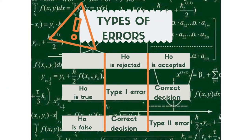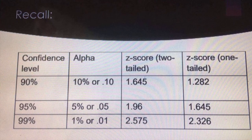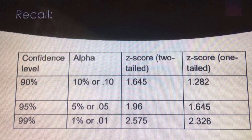In hypothesis testing, it is a must for us to consider the types of errors. Because in the end, you have to identify either if the H0 is rejected or H0 is accepted. Now, see this table. Let us also recall the values of alpha, z-score of two-tailed, and z-score of one-tailed to the confidence level displayed below.